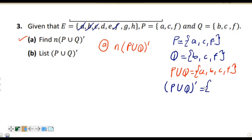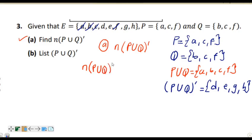We have remained with D, E, G, and H. So (P union Q) complement = {D, E, G, H}. The number of elements in (P union Q) complement — we count: 1, 2, 3, 4. So our answer is 4.